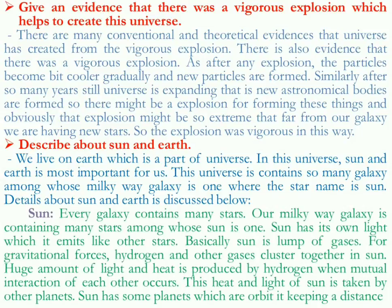Every galaxy contains many stars, and our Milky Way galaxy contains many stars — among those, the sun is one. The sun has its own light, that is why it is called a star. The definition of a star is: if any astronomical body can emit its own light, then it can be called a star. Basically, the sun is a cluster of many gases — mostly hydrogen gas and other gases. A huge amount of light and heat is produced when these hydrogen gases interact with each other. This heat and light of the sun is received by other planets.